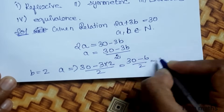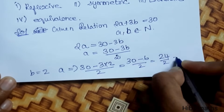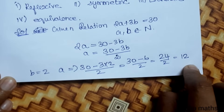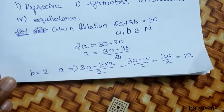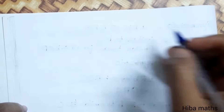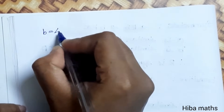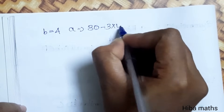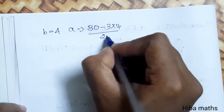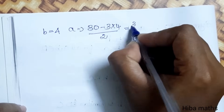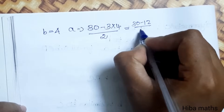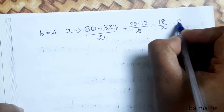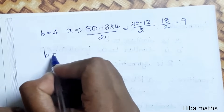Substituting b equals 2: a equals (30 minus 6) divided by 2, which is 24 divided by 2, equal to 12. Substituting b equals 4: a equals (30 minus 3 times 4) divided by 2. Since 3 times 4 is 12, we get 30 minus 12 equals 18, and 18 divided by 2 equals 9.